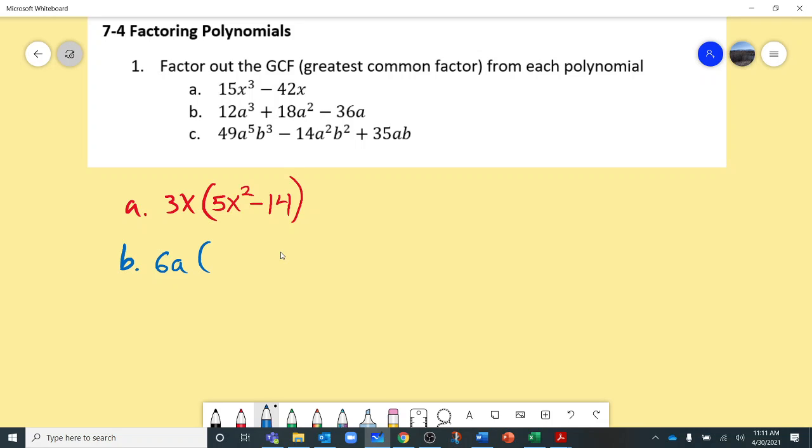And inside, to get from 6A to 12A cubed, 6 to 12, that's a 2. A to A cubed, that's an A squared, plus 6 to 18, that is a 3. And A to A squared is an A. And then minus 6 to 36 is multiplied by 6. And we already have the A.